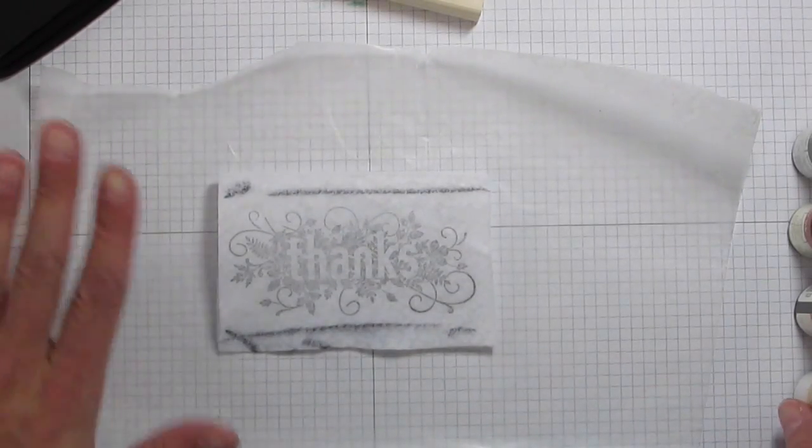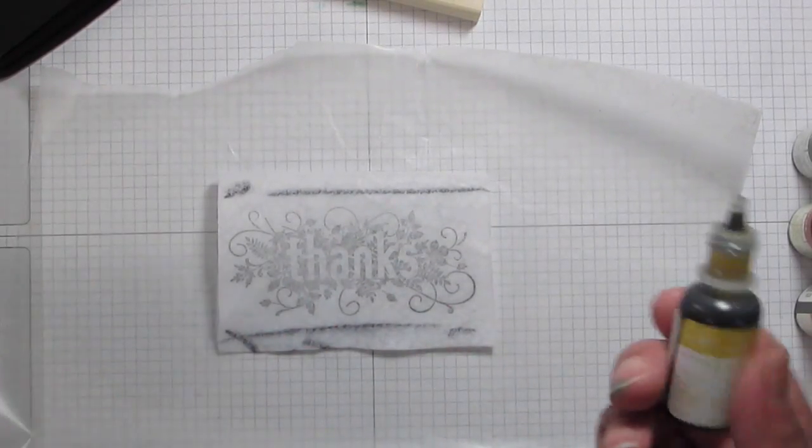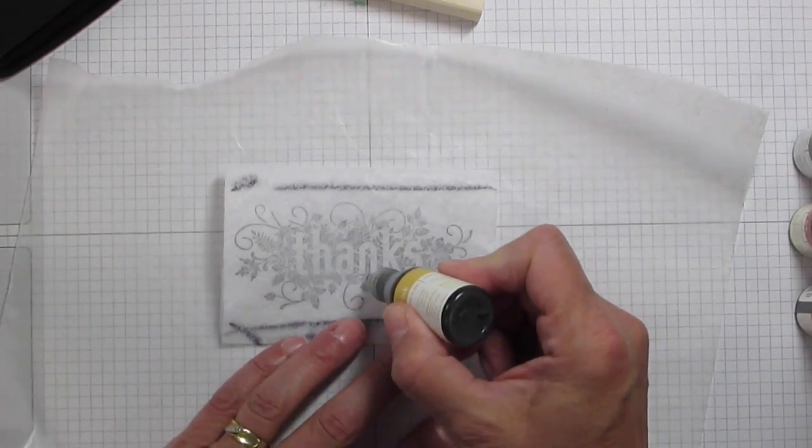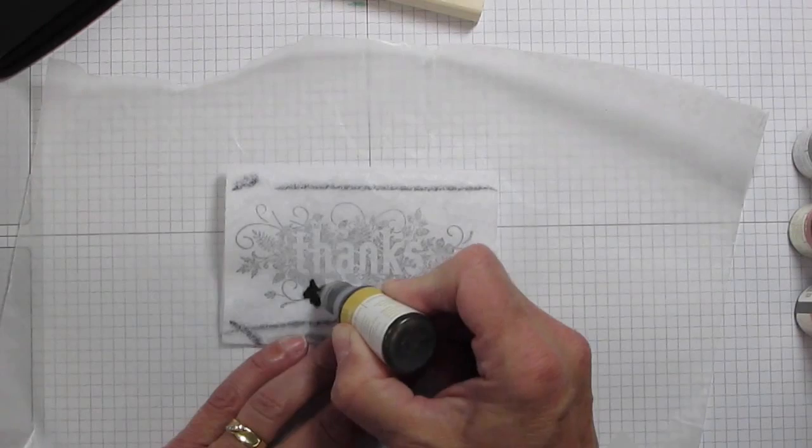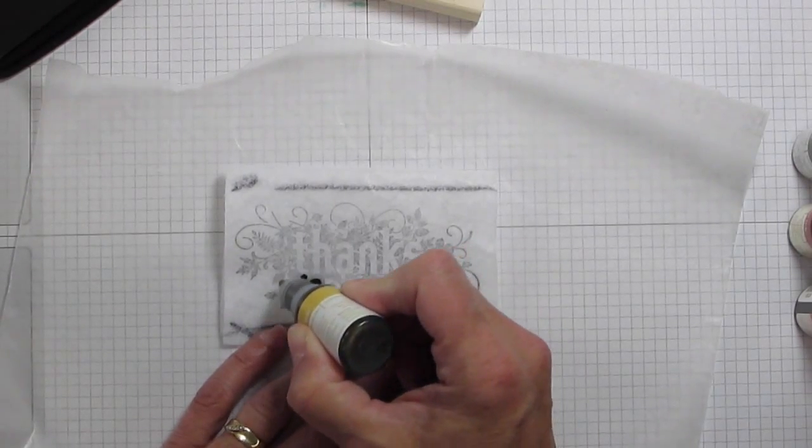And then, once that's dried, it doesn't take very long. I'm going to go ahead and take reinkers. And I'm just going to draw on here with the reinkers where I want these colors to be.